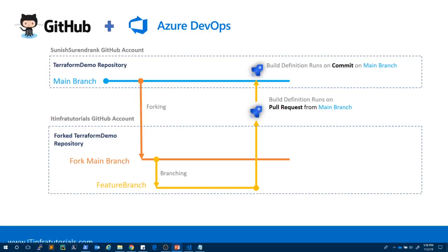The summary of this video: We created a Terraform Demo repository under the Suneesh Suryandran K GitHub account. Another user wanted to contribute, so he forked the main branch, created a feature branch, made his changes there, and raised a pull request back to the main Terraform Demo repository. Whenever a pull request is raised or a commit happens, a build definition runs automatically. In the next video, we will be creating a release definition that runs after this build definition. Thank you.